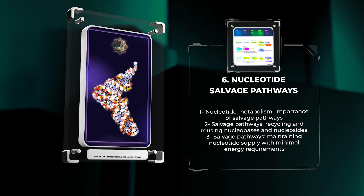In contrast to salvage pathways, the de novo biosynthesis of nucleotides involves the synthesis of nucleotides from simpler precursors. This complex process requires the coordinated efforts of multiple enzymatic reactions to produce purine and pyrimidine nucleotides, ensuring the cell's constant supply of these crucial building blocks.